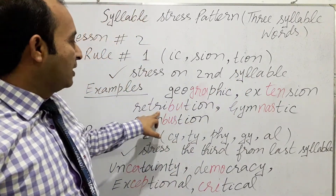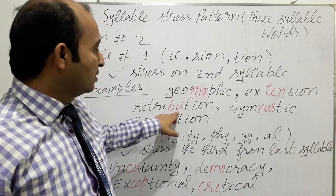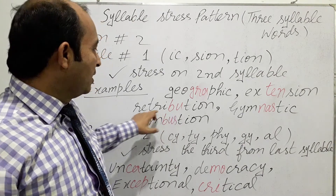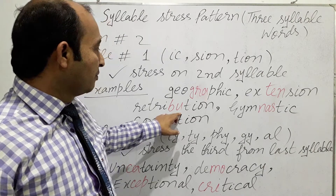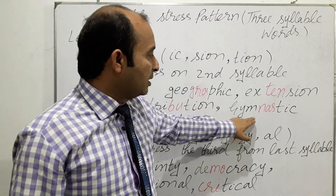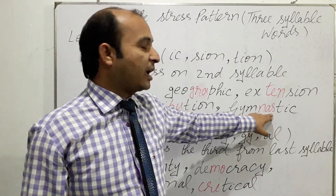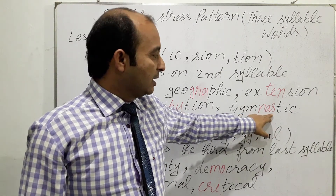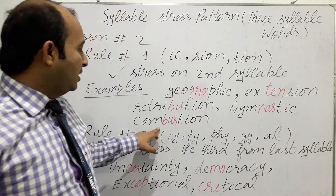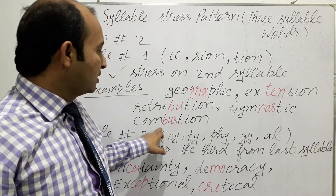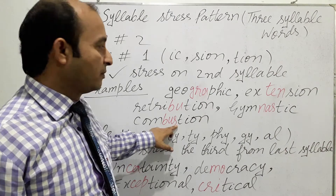Similarly, we have another word: 'retribution'. We are stressing on the second last syllable, 'bu'. Another example is 'combustion'. So this was the first rule for three syllable words: words ending in -ic, -sion, and -tion — we stress on the second last syllable.